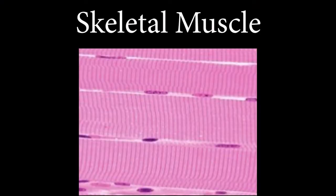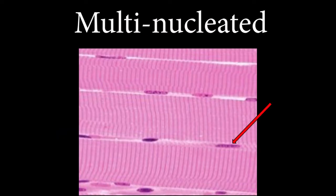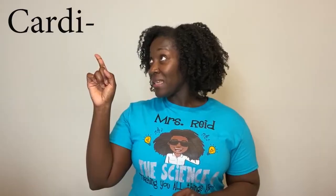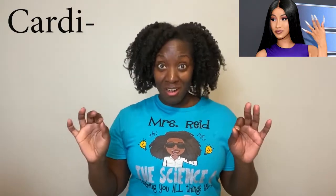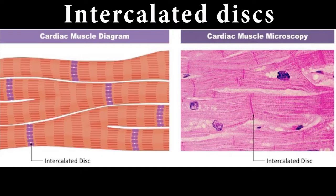Under the microscope, notice that skeletal muscle cells are striated and multi-nucleated, meaning they have many nuclei. When I got scared, I didn't tell my heart to beat faster — cardiac muscle, which is found in the walls of the heart, is under involuntary control. Cardi means heart, so cardiac muscle is only found in the heart. Under the microscope, it's striated like skeletal muscle, but cardiac muscle's key feature is intercalated discs, which are only found in cardiac muscle.